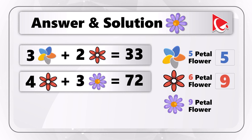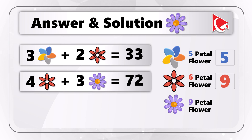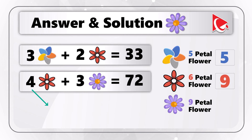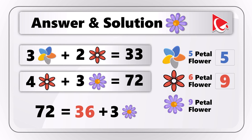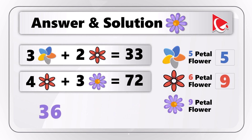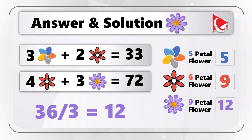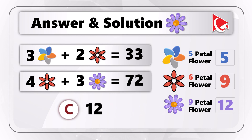At this point we know the five-petal flower equals 5 and the six-petal flower equals 9. Looking at the third expression — 4 six-petal flowers plus 3 nine-petal flowers equals 72 — we calculate 4 six-petal flowers as 36. So 72 equals 36 plus 3 nine-petal flowers, which means 3 nine-petal flowers equals 36. Therefore the value of the nine-petal flower is 12, and the correct answer is choice C: 12.